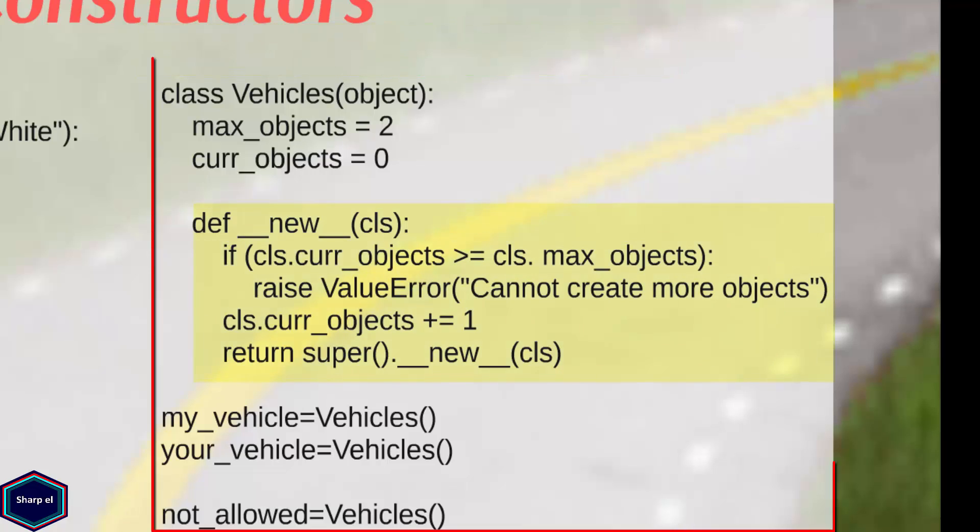Now let's see an example. New can be used to control the way an object is created. For example, with new I can restrict the total number of objects to be created from a class. The following code may look complicated but it is very simple. In this code, I have restricted my class vehicle to two objects.